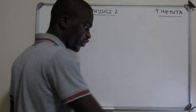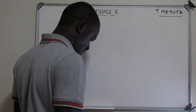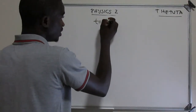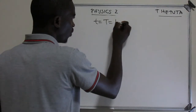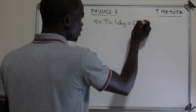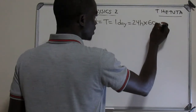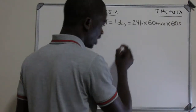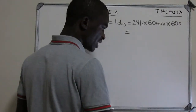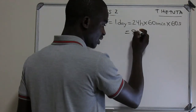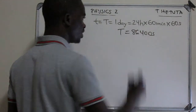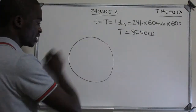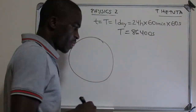Question 3 says the Earth rotates once per day. We are given the period — once a day means 24 hours. Converting: 24 hours × 60 minutes × 60 seconds gives us 86,400 seconds as our period for the Earth's rotation.